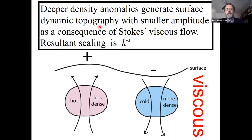Although I don't have time to go through the mathematical analysis, the reason why the scaling of observable dynamic topography is k to the minus one, or pink, is because of Stokes viscous flow. Deeper density anomalies generate surface dynamic topography with smaller amplitudes. As the density anomaly is buried deeper in the mantle, it has a smaller effect on the Earth's surface, giving rise to this pink noise.